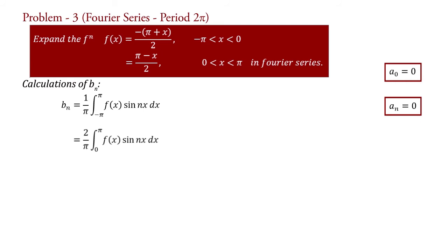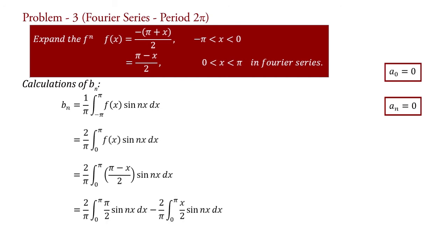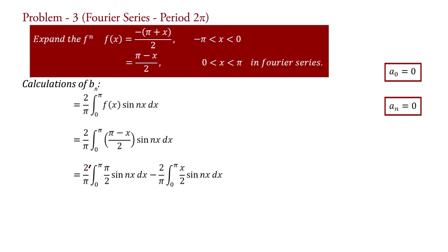Putting the value of the function, b_n equal to (2/pi) times the integral from 0 to pi of (pi minus x)/2 times sin(nx) dx. Expanding it: b_n equal to (2/pi) times the integral from 0 to pi of (pi/2) sin(nx) dx, minus (2/pi) times the integral from 0 to pi of (x/2) sin(nx) dx. The 2/pi and pi/2 cancel, and the factor of 2 cancels, giving b_n equal to the integral from 0 to pi of sin(nx) dx minus (1/pi) times the integral from 0 to pi of x sin(nx) dx.